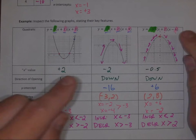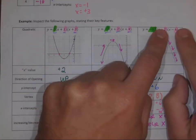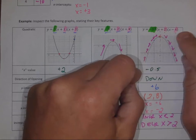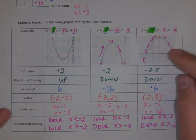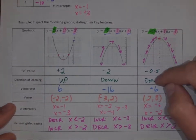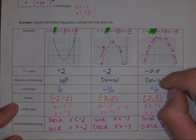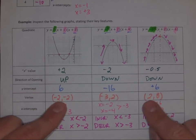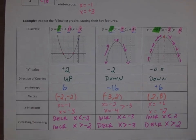In factored form we can find the x-intercepts, add them together and divide by two to get the axis of symmetry, then use that value to substitute in and find the y value — how high or low the vertex is. The a value tells us direction of opening, which tells us increasing or decreasing relative to the axis of symmetry.